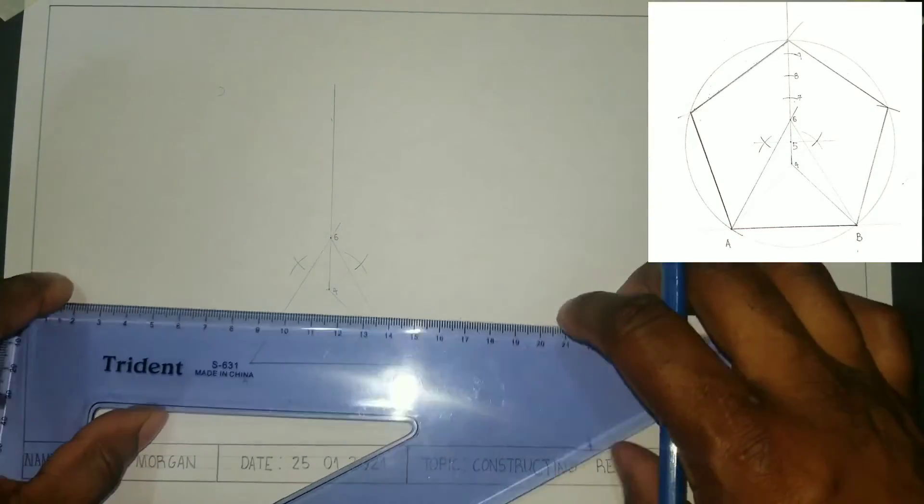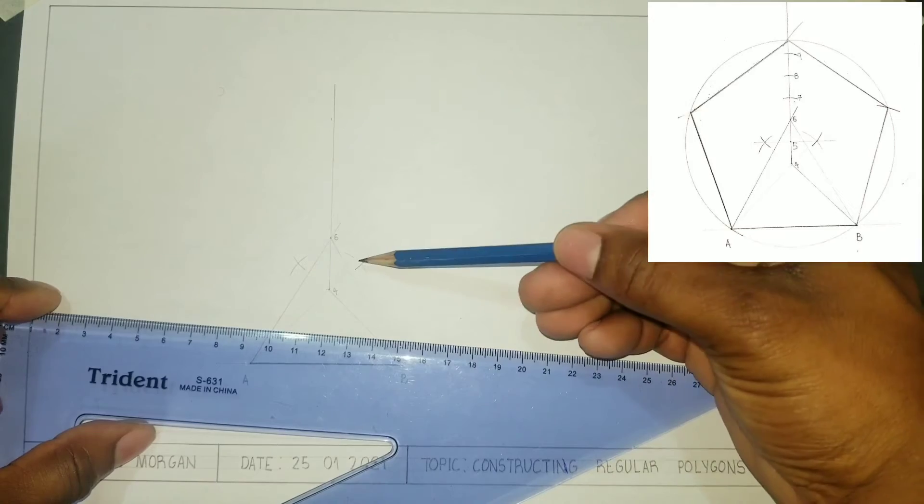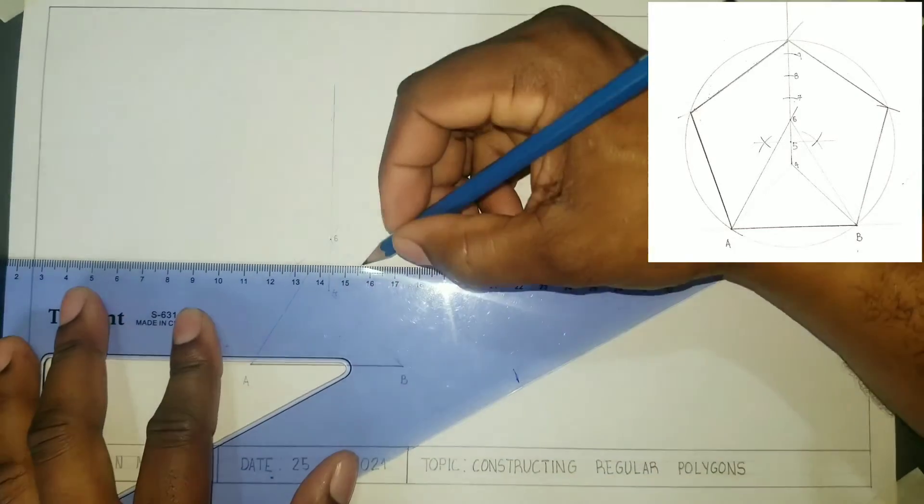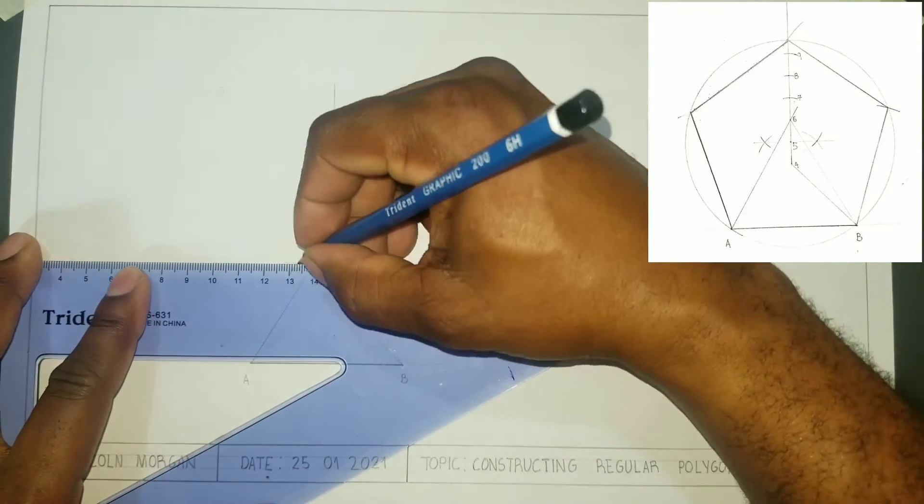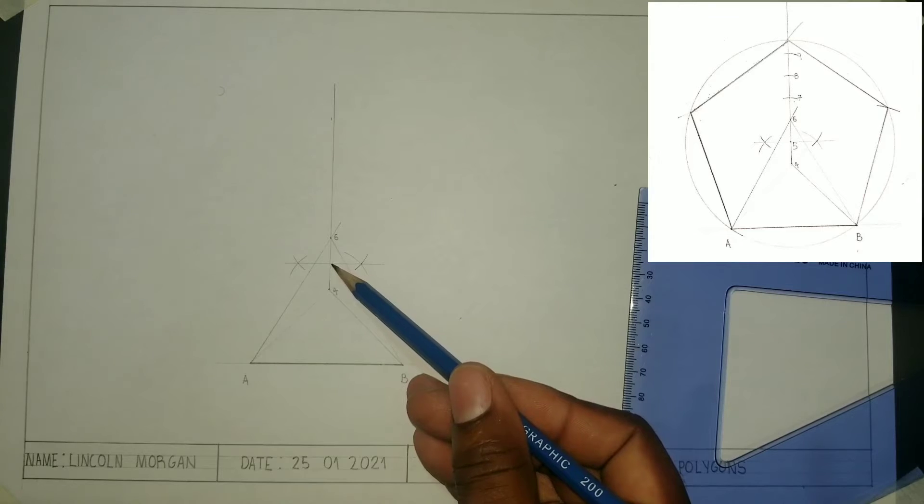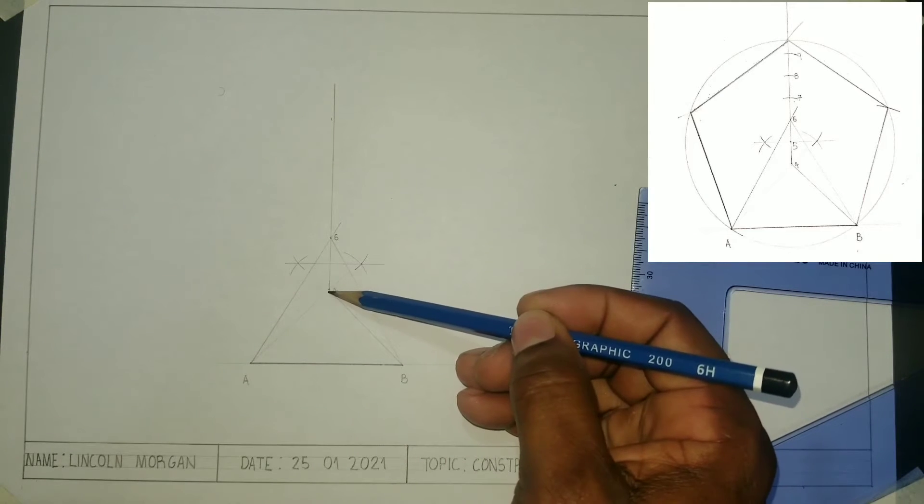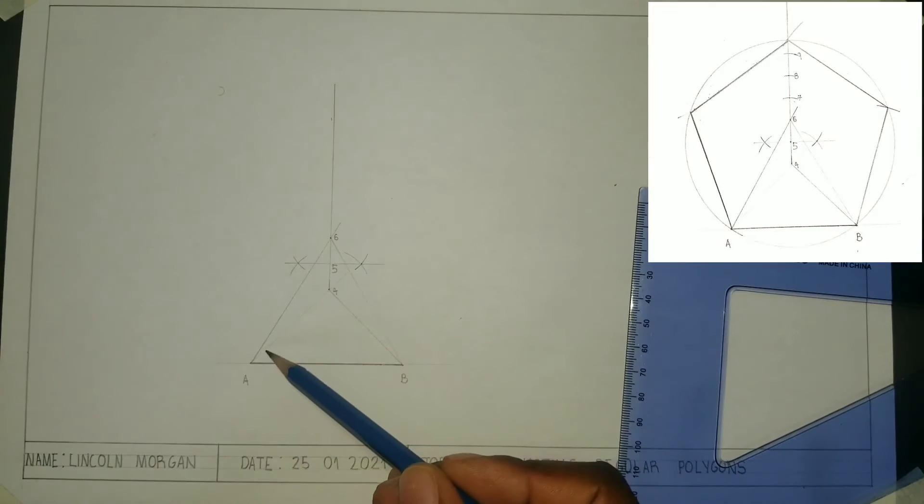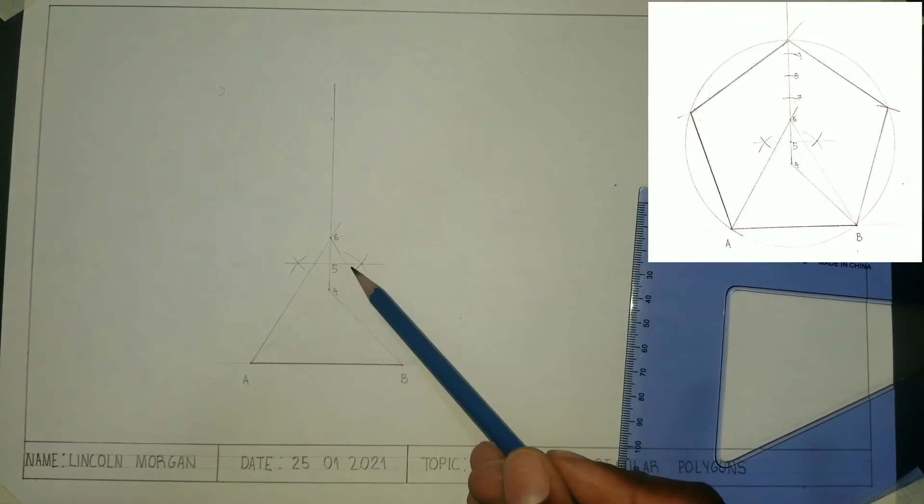We will now draw a line from this intersection to this intersection. We now have 0.5, which is the midpoint between 0.4 and 0.6. This angle is a 45-degree angle while this angle is 60 degrees. We bisected the distance between 0.4 and 0.6 to give us 0.5.